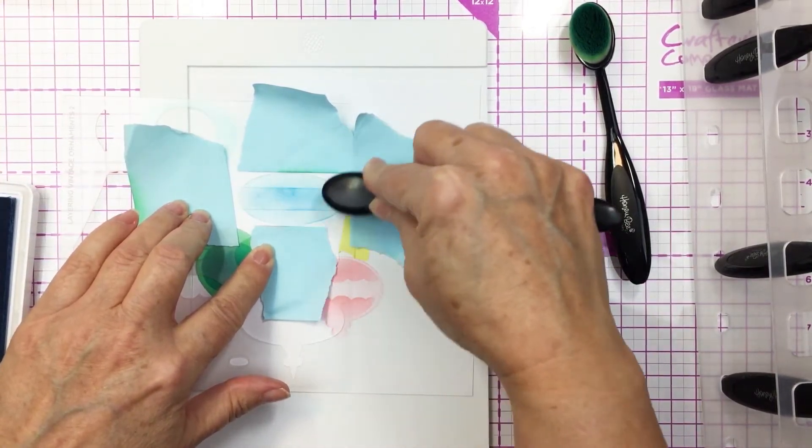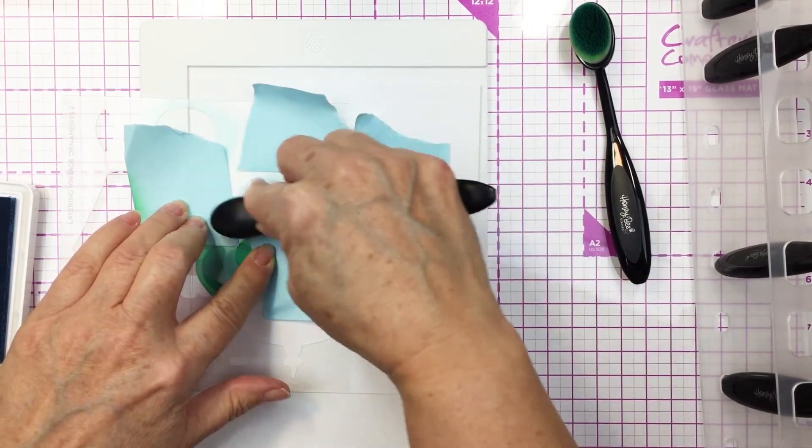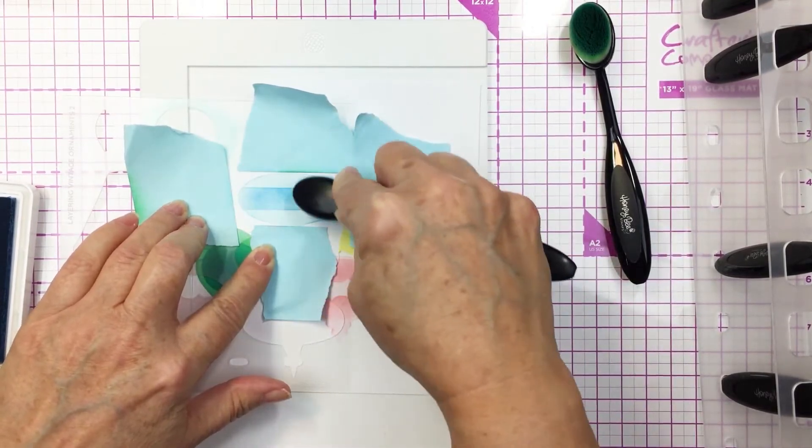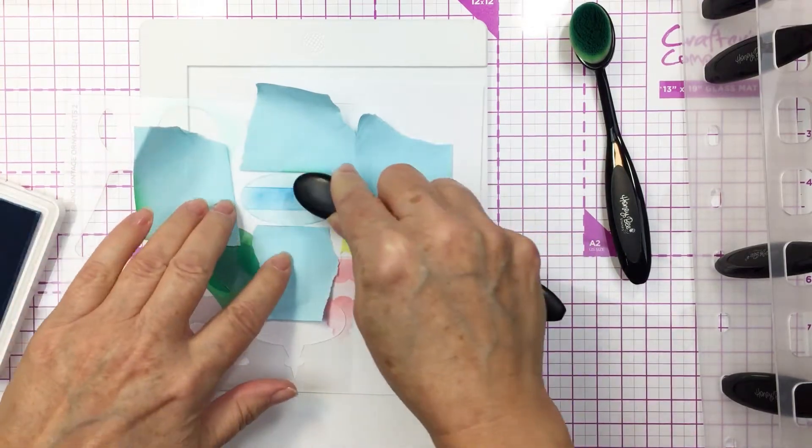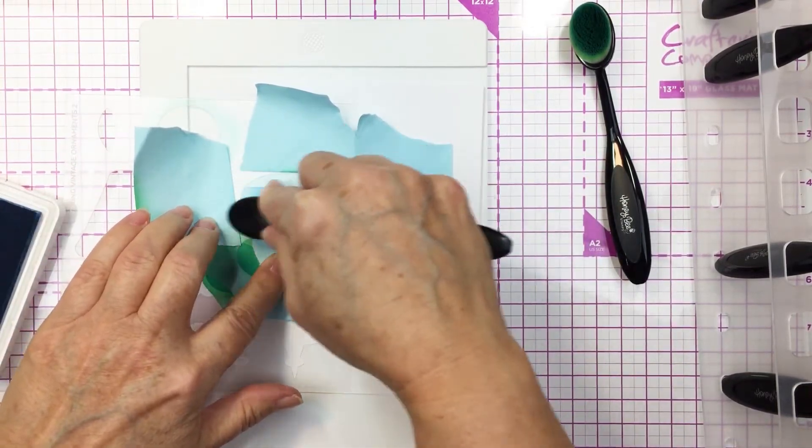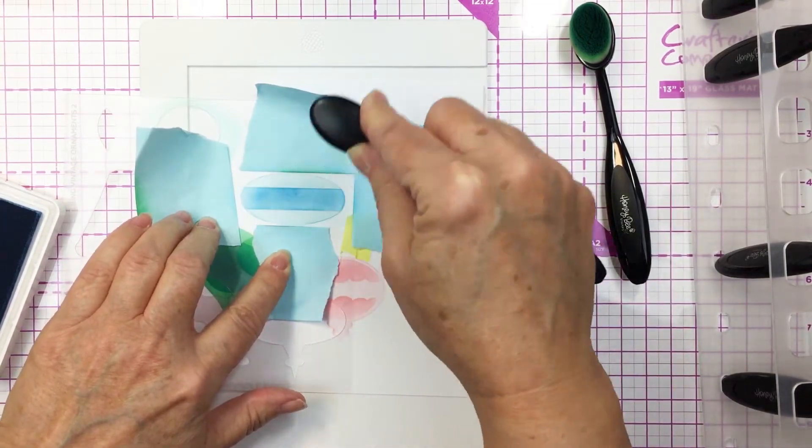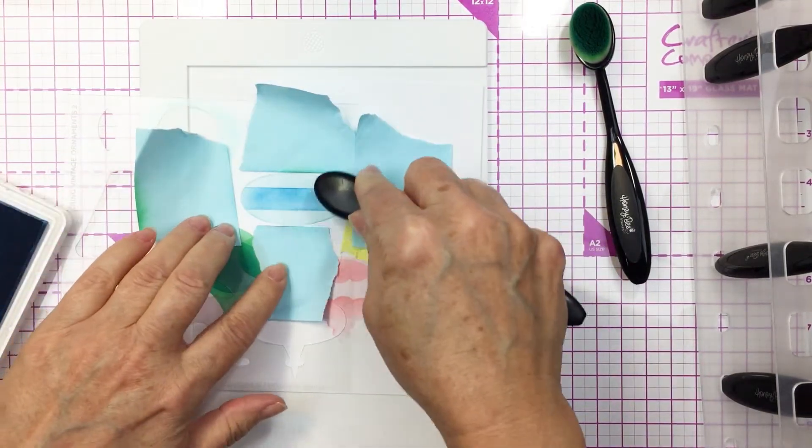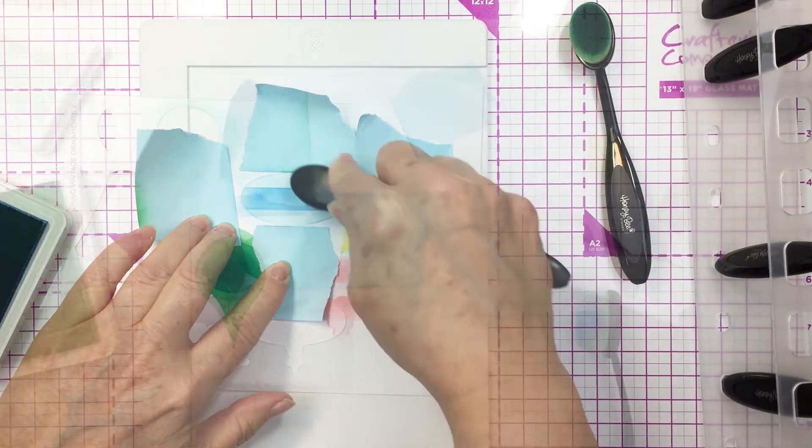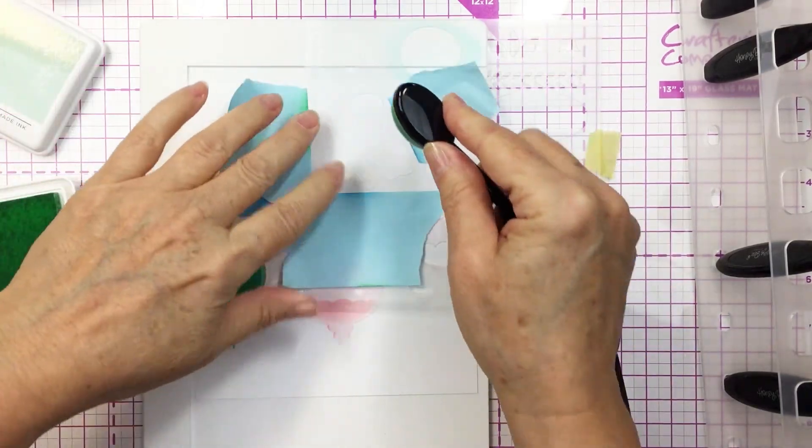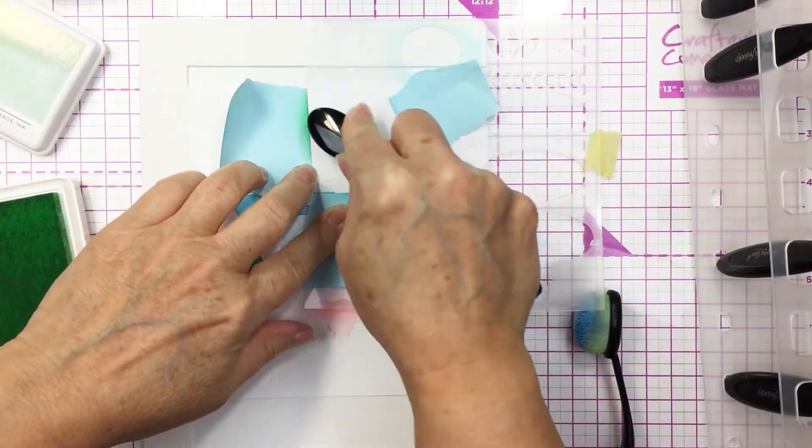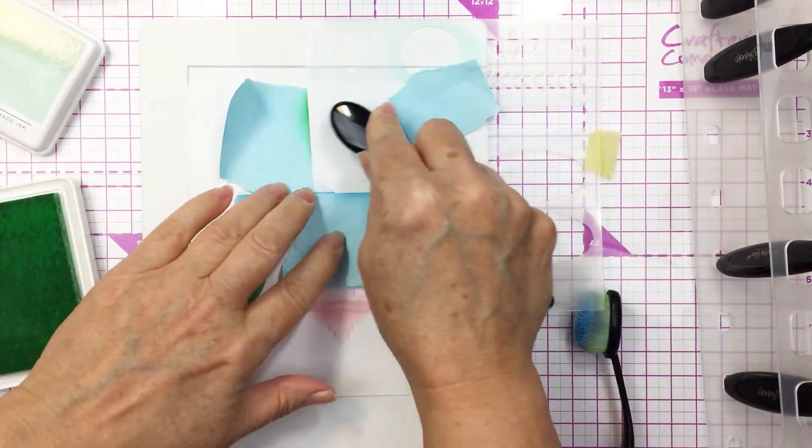I'm going in with another portion of the stencil just to create that detail. It's so fun to create these really interesting unique looking ornaments however you want with whatever colors of ink you have in your stash. You can use all kinds of different mediums as well, and you'll see that I do layer medium over top of these inks in a little bit.